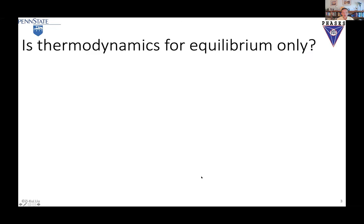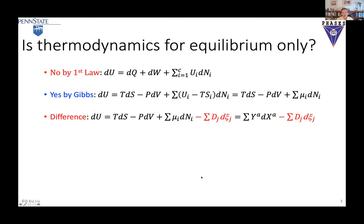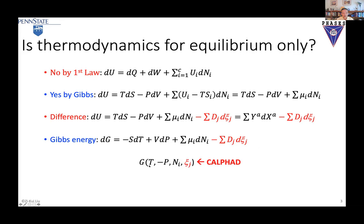I want to mention that some of the names have KSI in our functions, so it's not only for equilibrium. If you look at thermodynamics, we know that the first law does not limit the system to equilibrium, but the Gibbs equation does. What's dropped in the Gibbs equation is the driving force term — dropped by Gibbs in the 1870s — making it equilibrium only. If you add this term back into the Gibbs energy, you find it's not limited to equilibrium. If you drop this term, then it's for equilibrium. That means the CALPHAD model includes internal equilibrium.